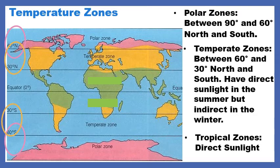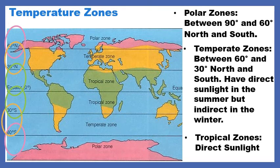And finally, near the equator, we call that the tropical zones. They receive direct sunlight, so they are very, very warm. You've got a tropical zone north of the equator and a tropical zone south of the equator.